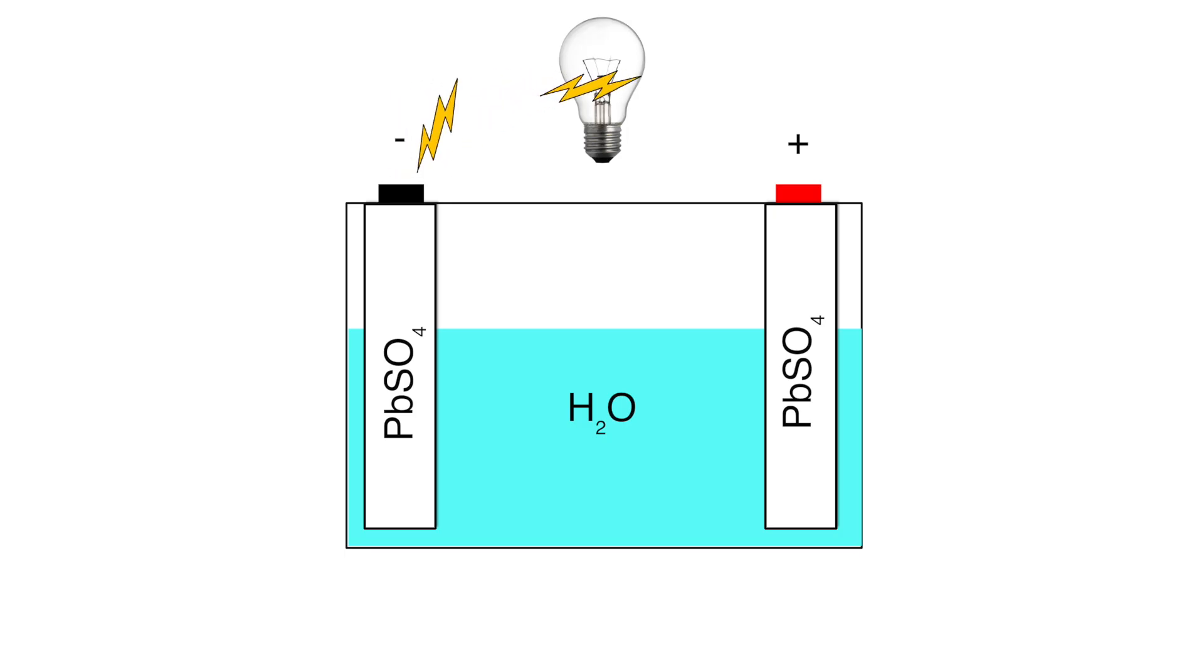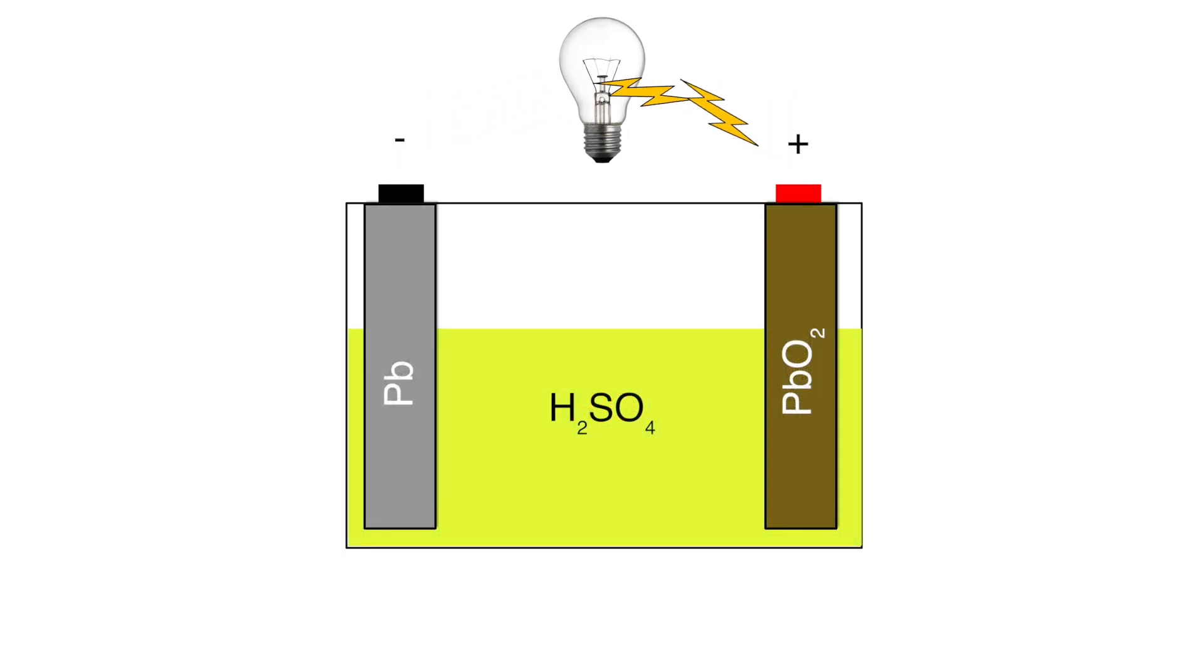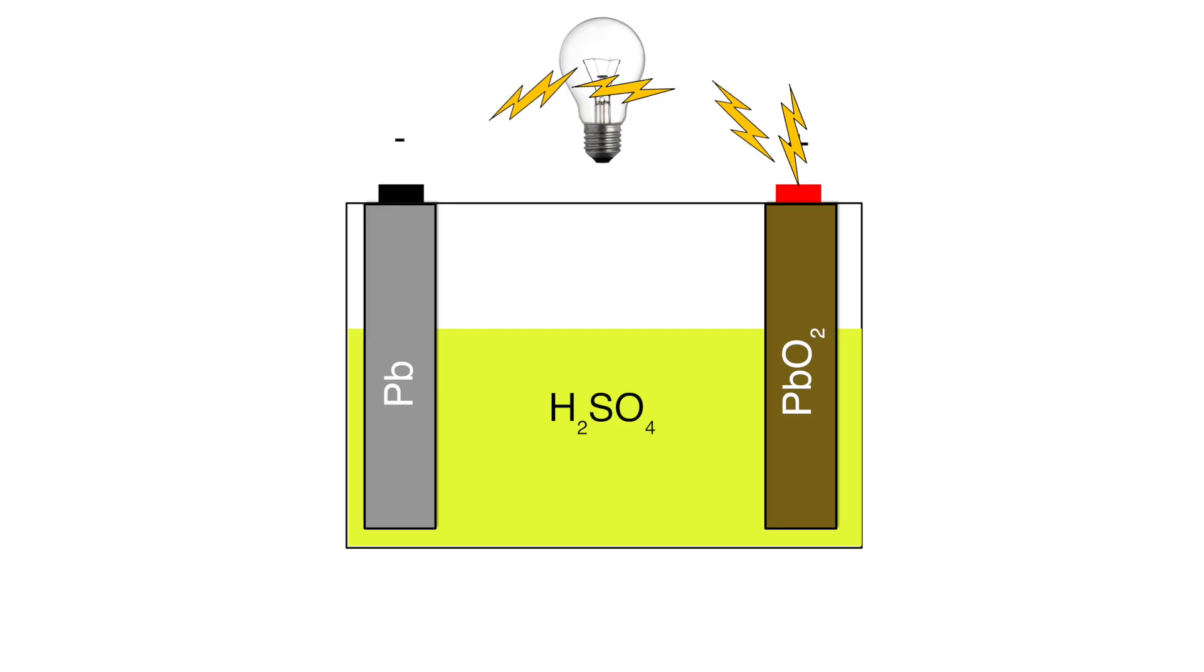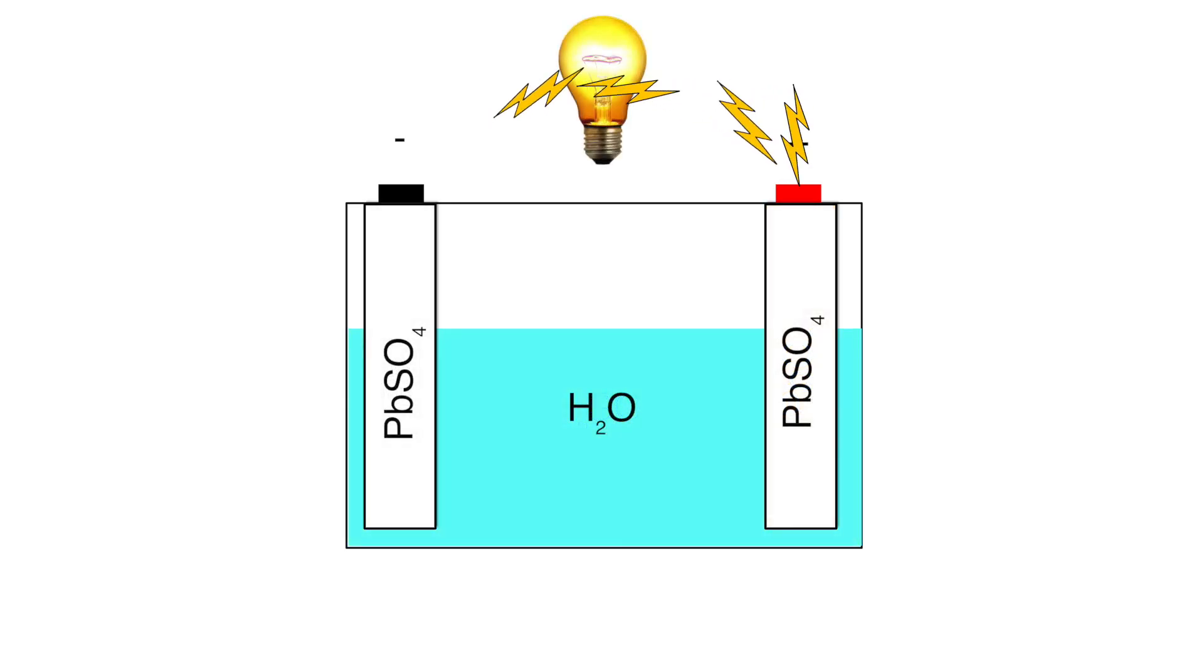When the battery is recharged, this reaction happens in reverse, regenerating the sulfuric acid and converting the electrodes back into lead and lead oxide. This principle of reversible reactions is the heart of most battery chemistry. The reactions are slow, which allow the batteries to put out a constant stream of power for a long time.